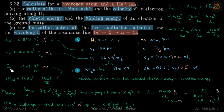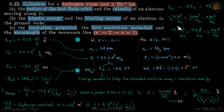The energy of the nth orbit gives total energy, kinetic energy, and potential energy. The total energy En = -13.6 z²/n² eV, kinetic energy KE = +13.6 z²/n² eV, and potential energy PE = -2 × 13.6 z²/n² eV. From this we can see that |En| = |KEn| = ½|PEn|, i.e., potential energy magnitude is twice the kinetic energy magnitude.